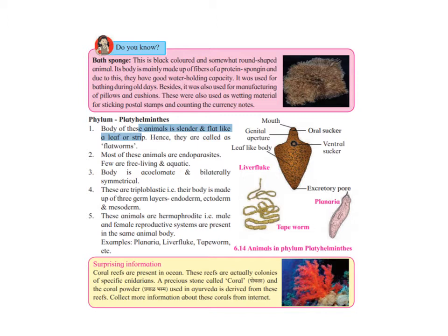Examples include tapeworm, which is flat and long like a measuring tape; planaria, which we studied in the previous chapter on regeneration; and liver fluke, which is a parasite with a mouth that works as a sucker. The sucker is the structure through which they suck in blood or nutrients from the host body — its body shape is more like a leaf.